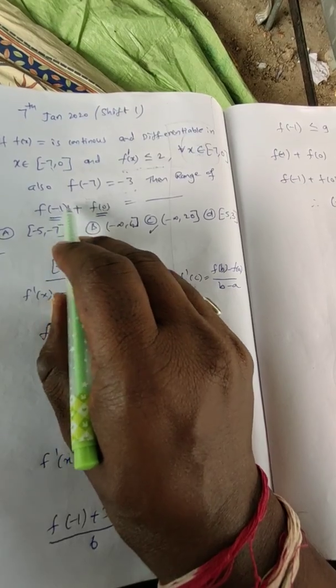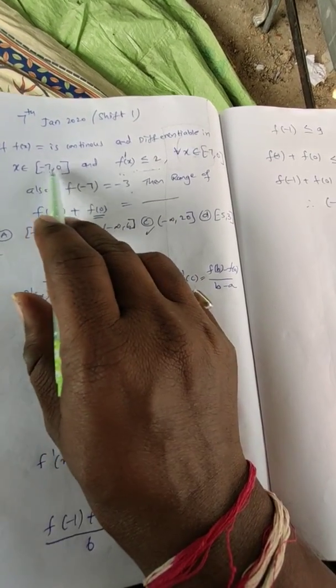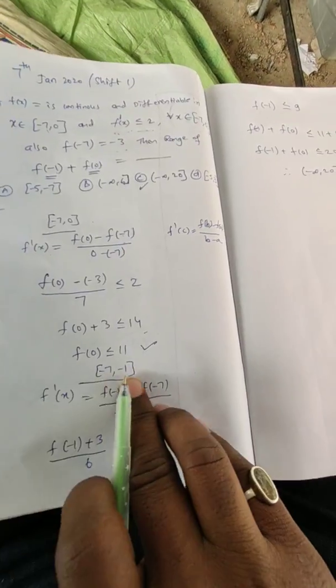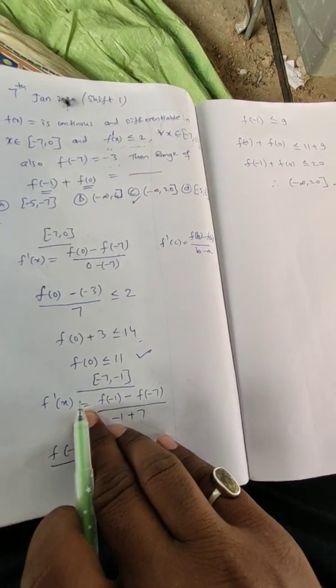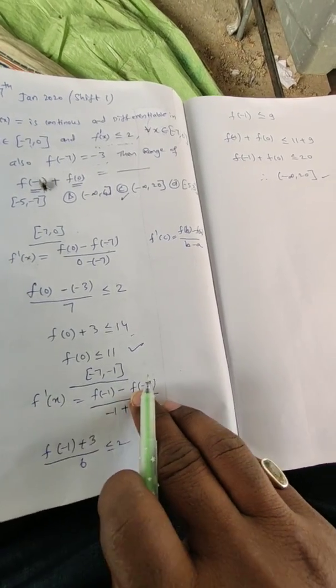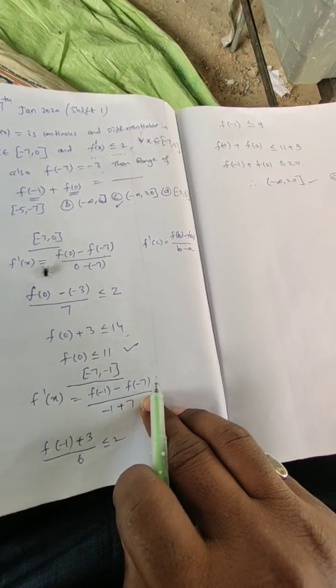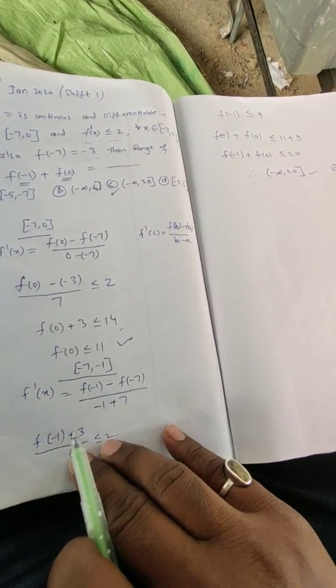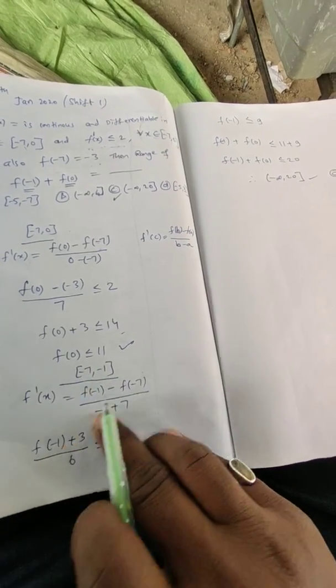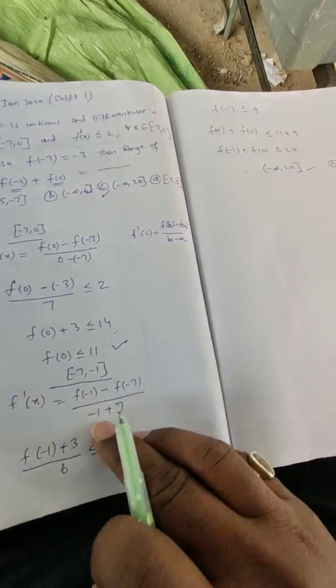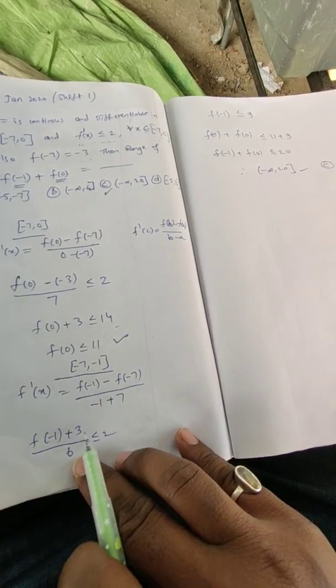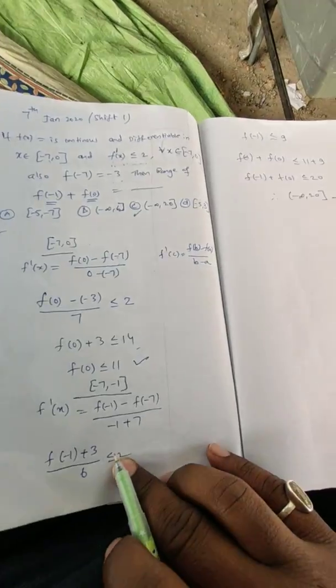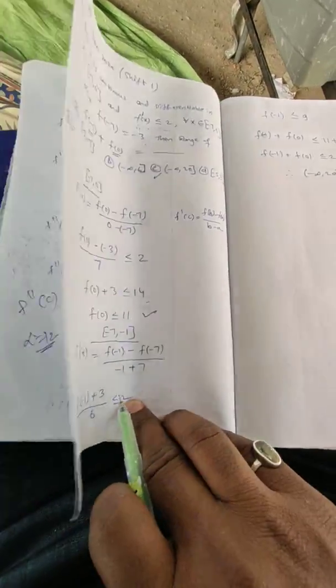Now let us go for the second one, f(-1). So the closed bracket should be taken [-7, -1]. According to the same formula, f'(x) = [f(-1) - f(-7)] / [-1 - (-7)]. Here f(b) - f(a) / (b - a). So f(-1) - f(-7) which is -3, so f(-1) + 3 divided by 6, and this value is less than or equal to 2.